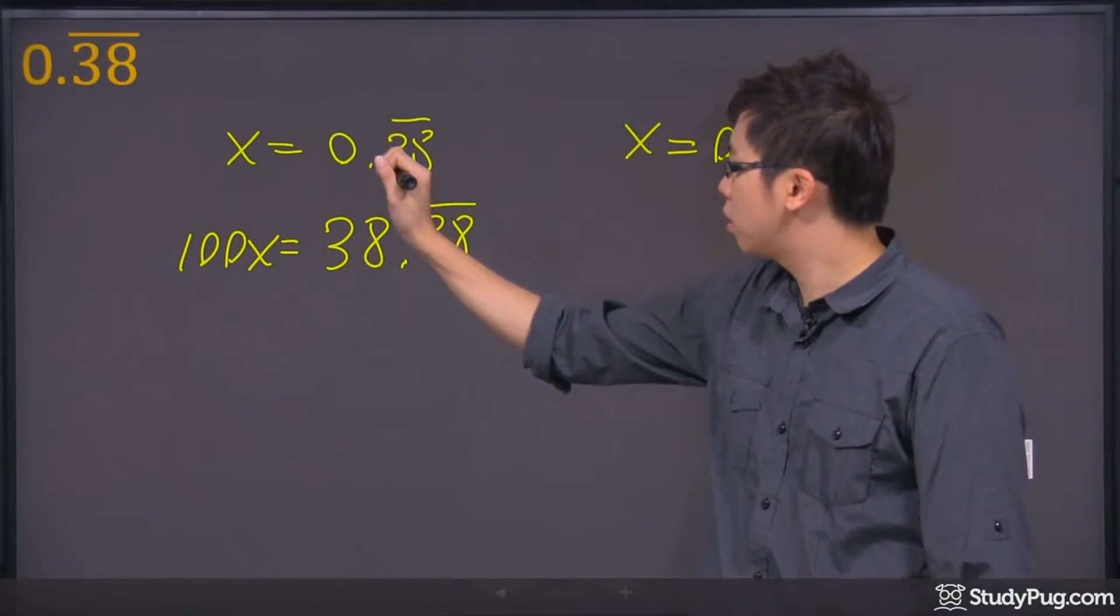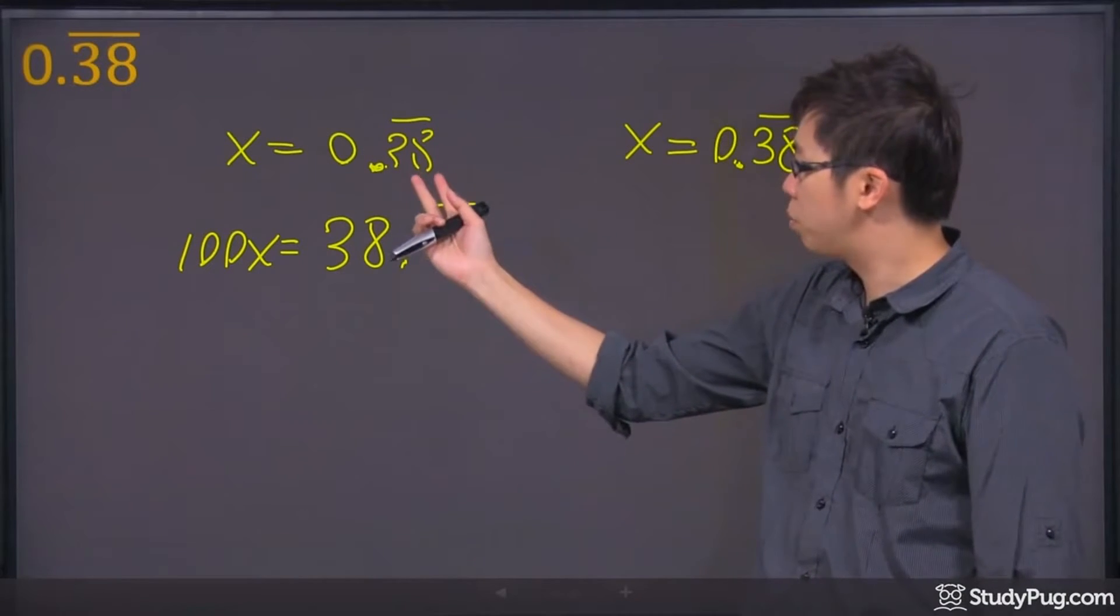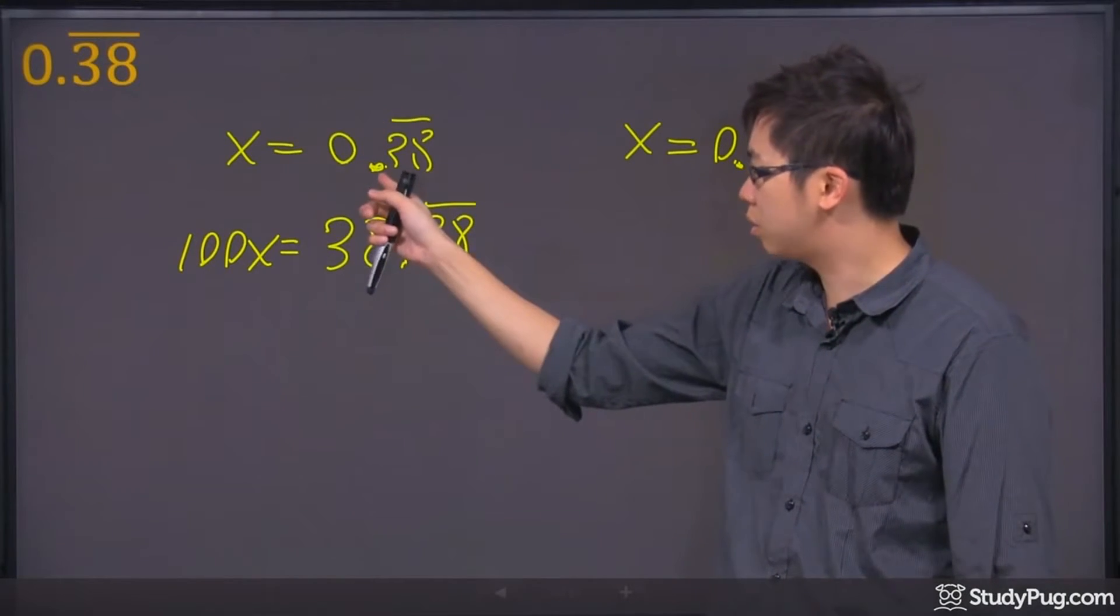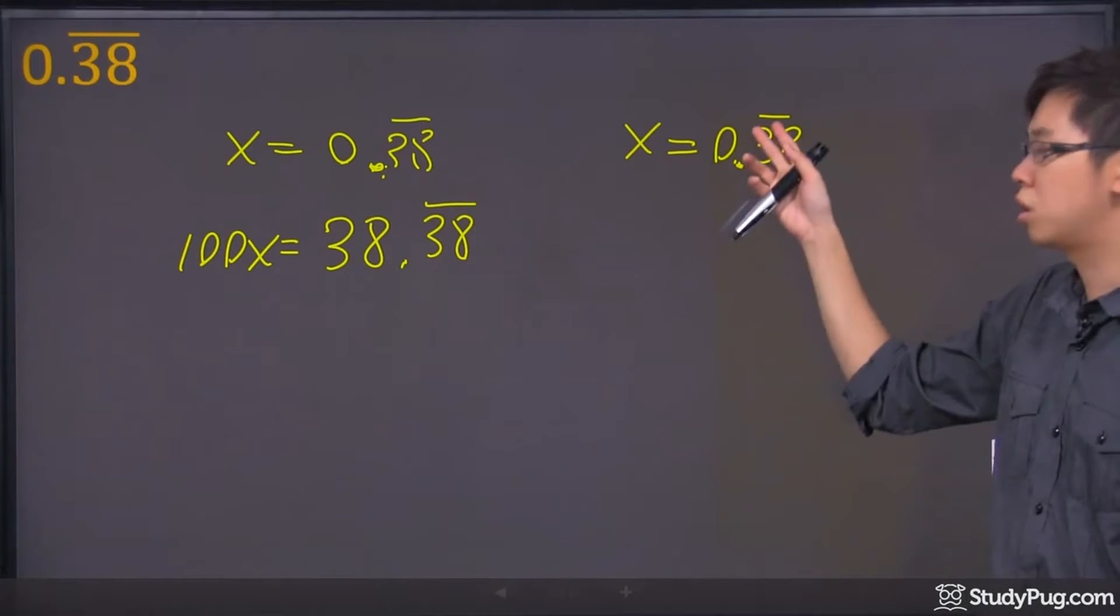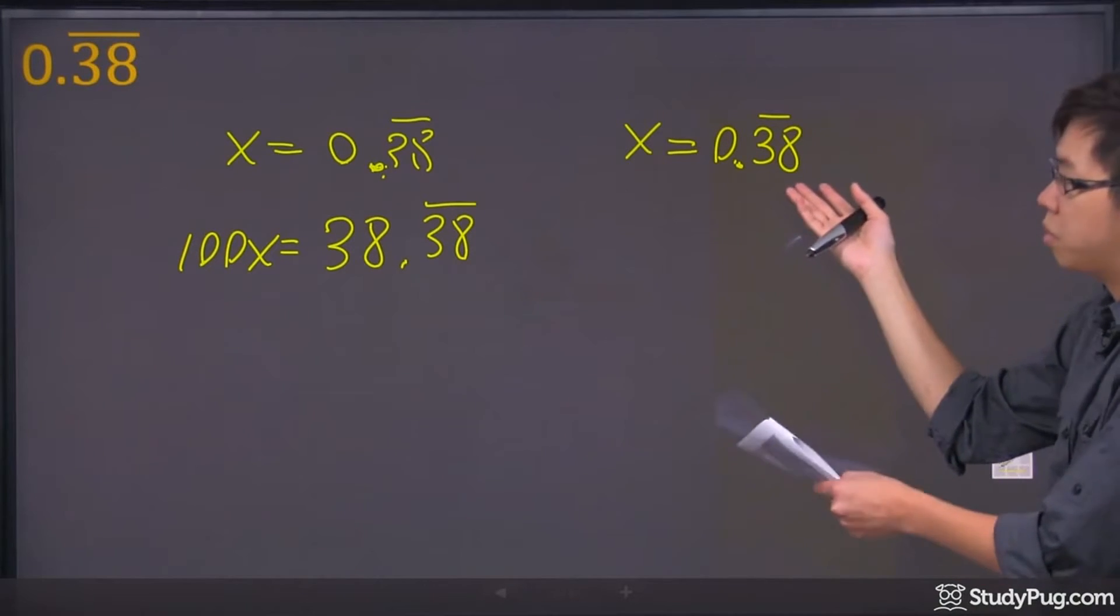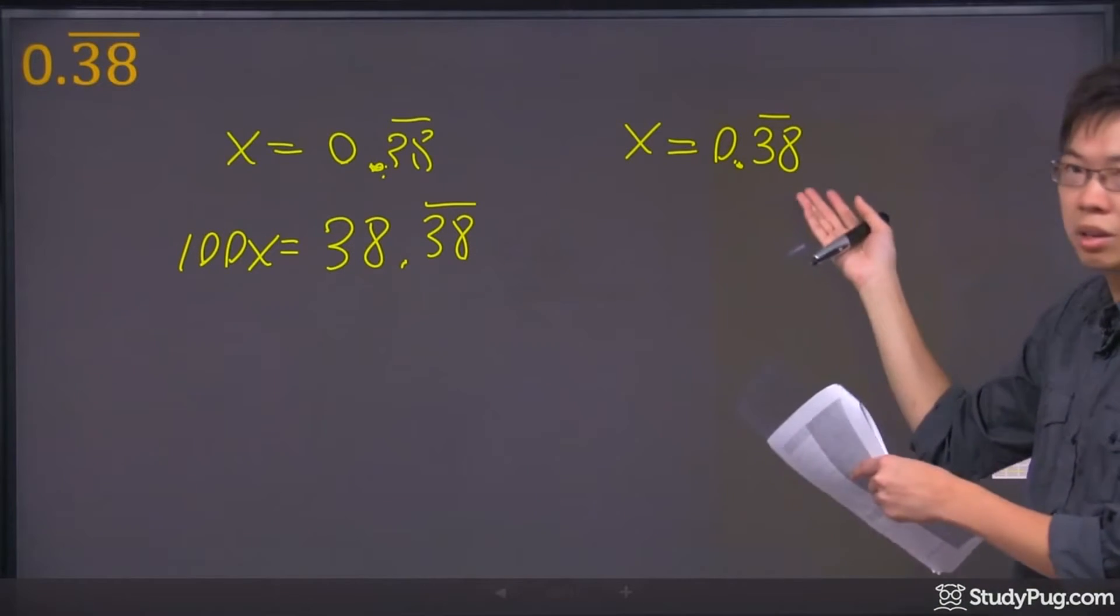So remember, this one right here, you're trying to put the repeated decimals on the left side of the decimal sign. This one here, you're trying to place on the right side. It just happened in this case, it's already on the right side.